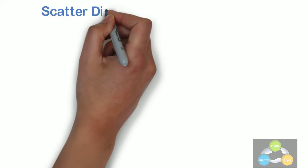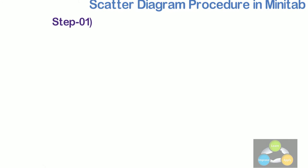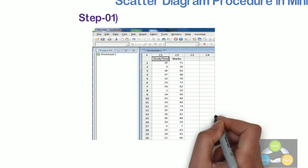Now, let's see the scatter diagram procedure in Minitab. Step 1. Copy the data from Excel file into the Minitab worksheet.